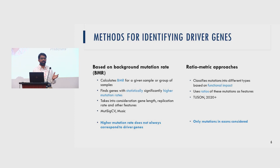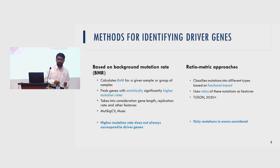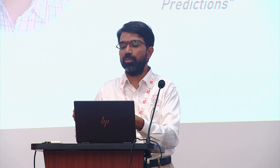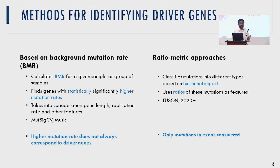Methods for identifying driver genes can be broadly split into two classes. The first is based on background mutation rate — it involves statistical counting of how often you find a mutation driving cancer in the genome. Genes statistically higher than background mutation rates are captured as possibly involved in cancer progression. The second class is ratiometric approaches, where you collect features capturing various aspects of mutations — ratios of different kinds of mutations — and run a machine learning algorithm to figure out which mutations are tumor suppressor genes or oncogenes.